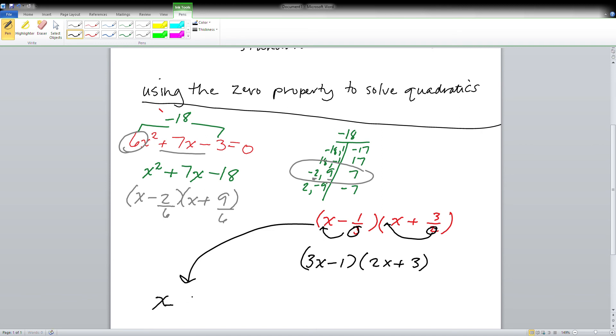And then if they can simplify, go ahead and simplify them. They both do, so the first one becomes x - 1/3 and the second one is x + 3/2.